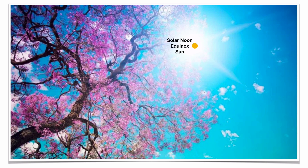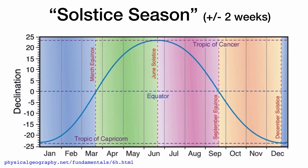If this picture is of the solar noon equinox sun — the position of the sky at solar noon on the equinox — that means three months later or earlier, the June solstice or December solstice will be at that same location in the sky, plus or minus five degrees.